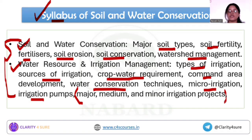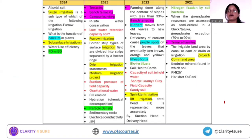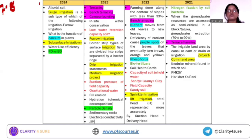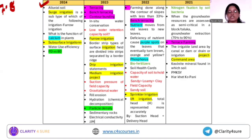From this syllabus, you can expect around 7-8 MCQs. Let's see what kind of MCQs are coming. In 2024, the first question was on alluvial soil — it is part of the major soils of India. The question was: which of the following soils comprises more than 40% of India's soils? The answer is alluvial soil.